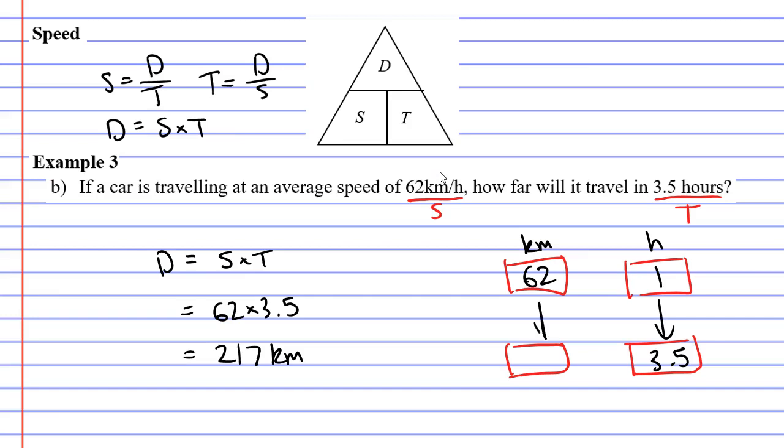We want to figure out how far we will travel in 3.5 hours. How do we do that? Well, we draw our two arrows, and we can see that we're going to times by 3.5. 62 times 3.5 gives us our 217 kilometers that we would have traveled in 3.5 hours.